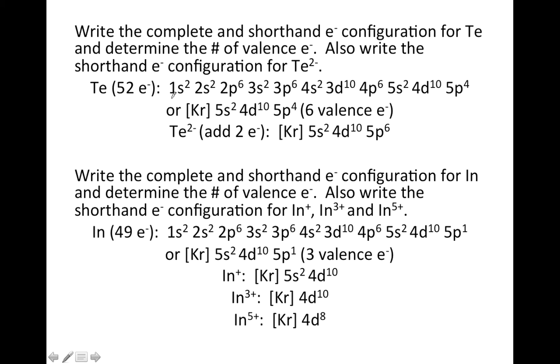So let's look at Te, 52 electrons. I wrote the configuration of neutral Te here. If you need to stop the video and verify that, feel free. But once we have that, if I want to do the shorthand, I can just go up from Te one row and all the way to the right and write Kr as my noble gas. Since Te is in the fifth row, I'm going to start with 5s and go from there.